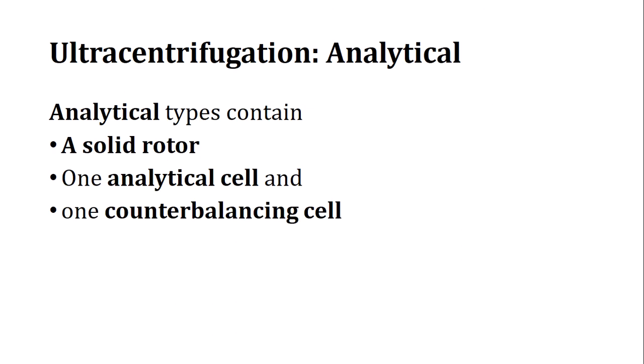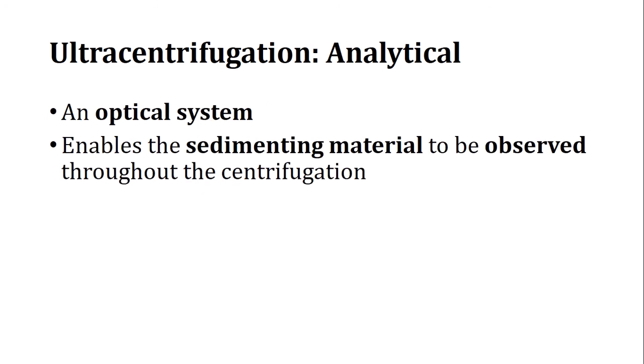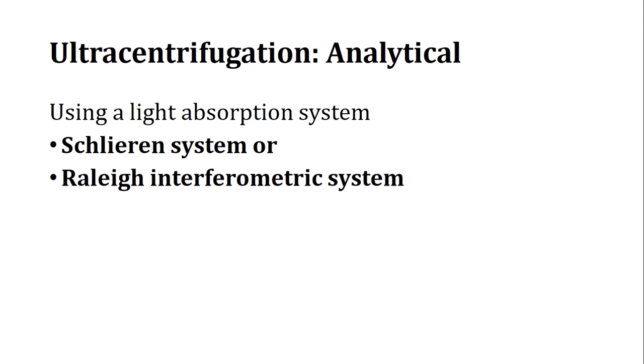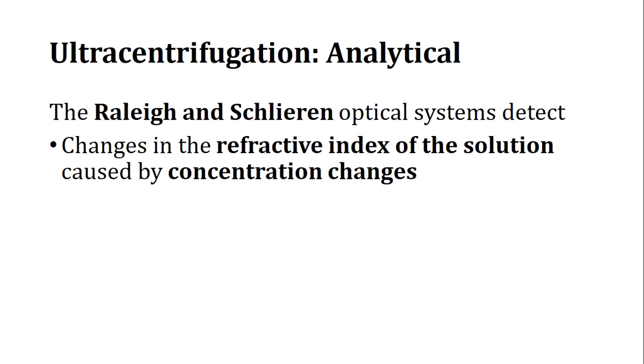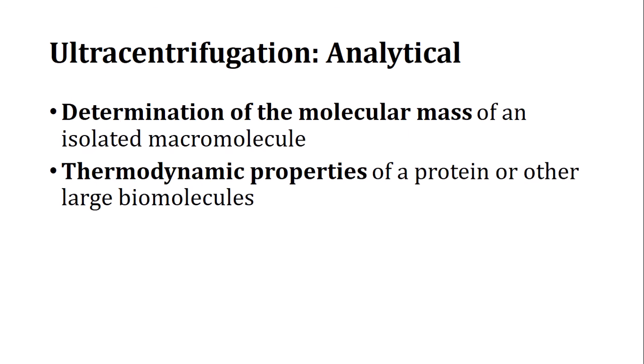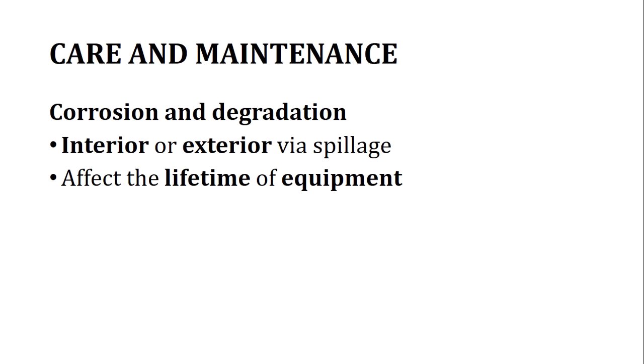The analytical ultracentrifuge contains a solid rotor, an analytical cell, and a counterbalancing cell. It has an optical system that enables sedimenting material to be observed throughout centrifugation. Using a light absorption system — called the Schlieren system or Rayleigh system — both optical systems can detect changes in the refractive index of the solution caused by concentration changes. Applications include determination of molecular mass of isolated macromolecules and thermodynamic properties of proteins and large biomolecules.